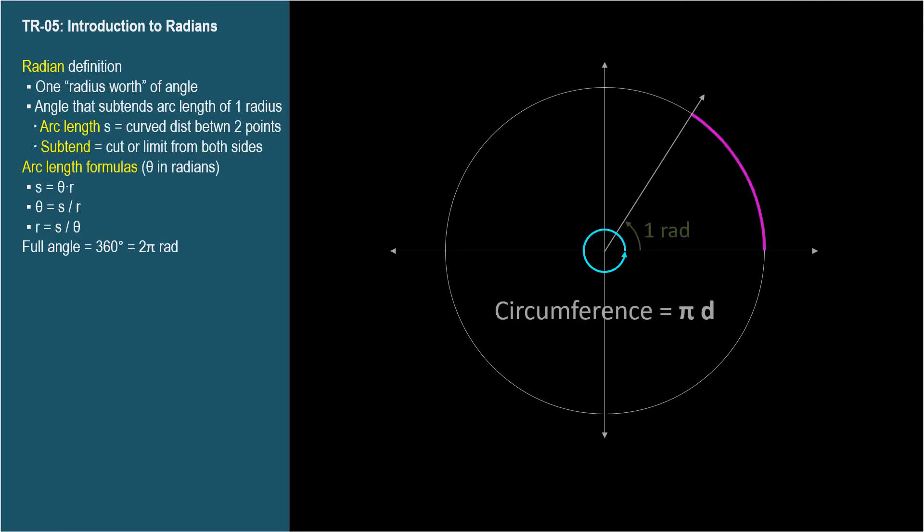You should remember from geometry that a circle's circumference is pi times the diameter. Since the diameter is two times the radius, this means a circle's circumference is two times pi radii, which means there are two pi radians in a full circle, or a full rotation angle.